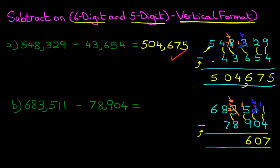Now on to the thousands, we've got 2 minus 8. Because 2 is smaller than 8, we're going to take 1 from the column on the left — in this case, it's the 8. So let's cross out the 8. 8 minus 1 is 7, and the 1 we have taken we're going to add to the thousands column. It's looking a little bit messy, but I hope you can follow this. The thousands has now become 12 minus 8. 12 minus 8 is 4.